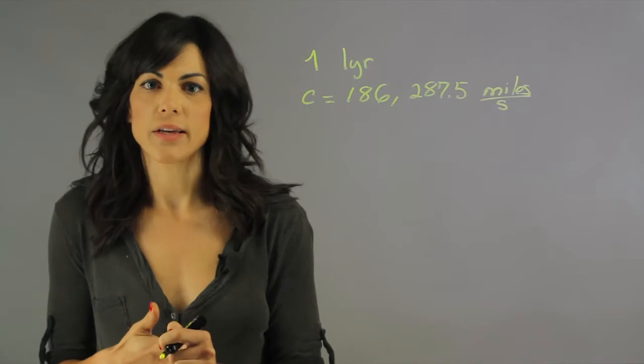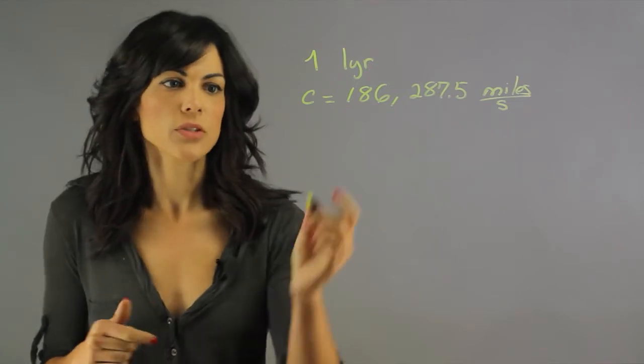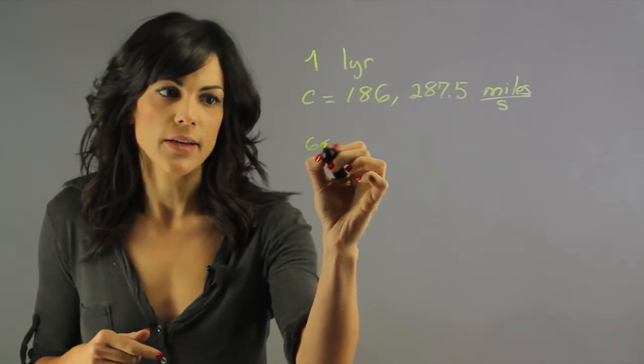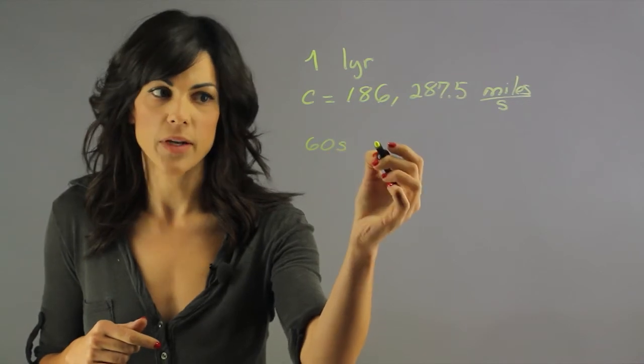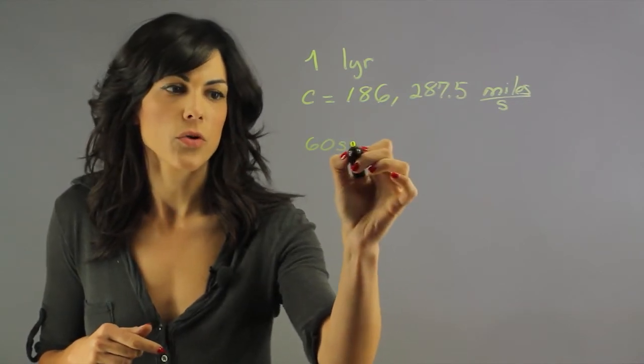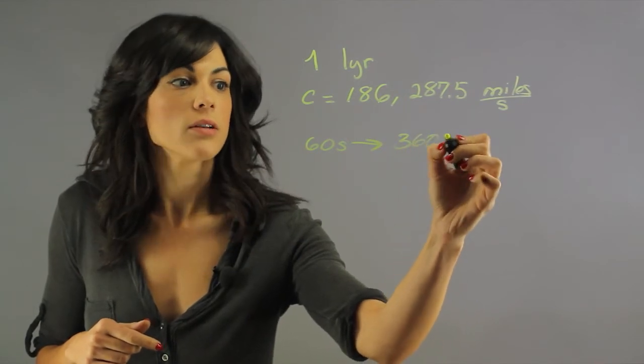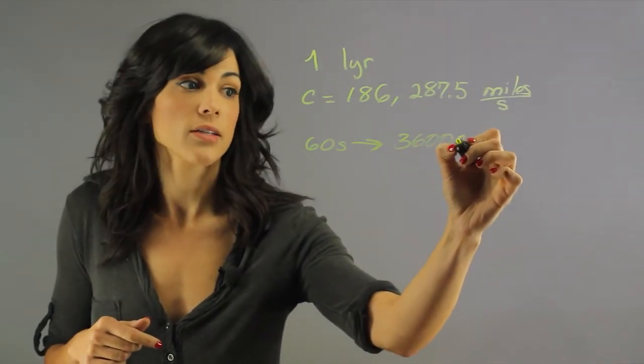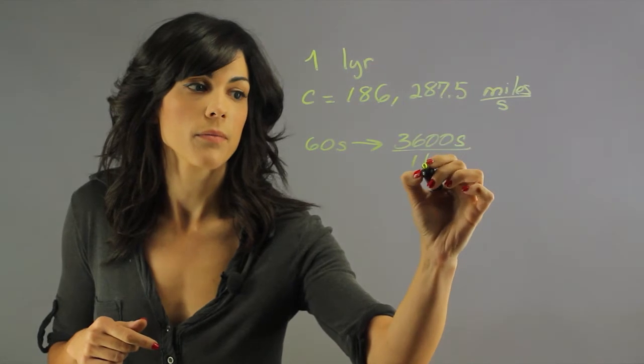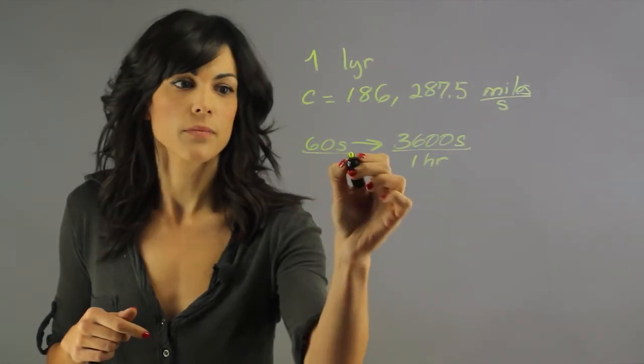Now let's figure out how many seconds are in one year. There are 60 seconds in a minute. So you have 3,600 seconds in one hour. Right, in one minute.